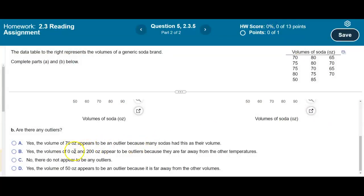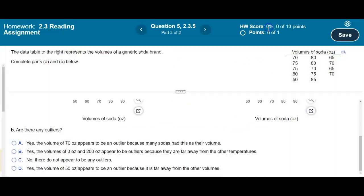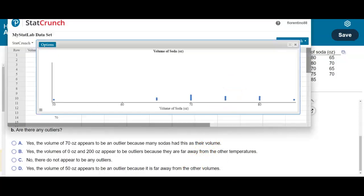Okay. So now it says here, yes, the volume of 70 ounces appears to be an outlier. So is 70 ounces an outlier? Well, that's not true because 70 is not an outlier. And let me just use the StatCrunch data here. So 70 is not an outlier.